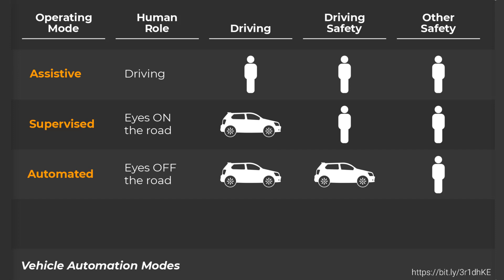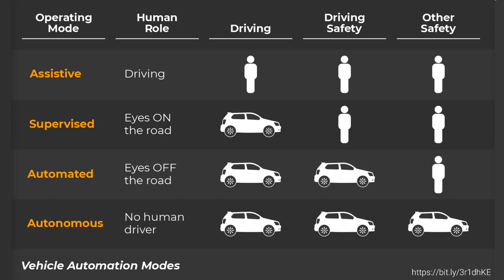The third mode is 'automated.' In automated mode, the human is allowed to have eyes off the road. The vehicle is driving and responsible for driving safety, but the human passenger is still responsible for other aspects of safety such as occupant safety and cargo safety. There's still an expectation that a human in the vehicle takes charge for things the vehicle can't handle, such as managing a post-crash accident scene. For an 'autonomous' system, there's no expectation of a human driver present, either inside or remotely. The vehicle drives, the vehicle is in charge of driving safety and all other aspects of safety. That does not mean there's no possibility of human intervention — rather, if a situation requires human intervention, it is the vehicle's responsibility to figure out it needs help and reach out to get it.